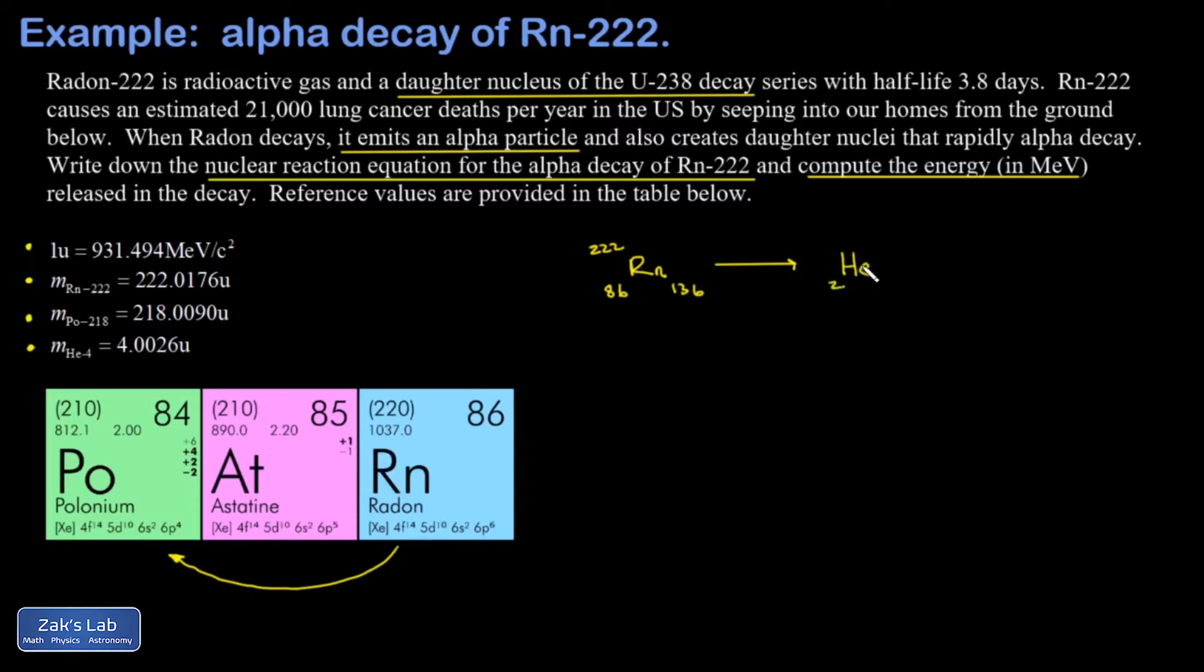Helium has two protons and two neutrons, four total nucleons. Again, I've lost two protons, so now I'm talking about polonium for my remaining large nucleus. Polonium has 84 protons—that's two less than I had before. I also lost two neutrons, which means there should be 134 of those now.